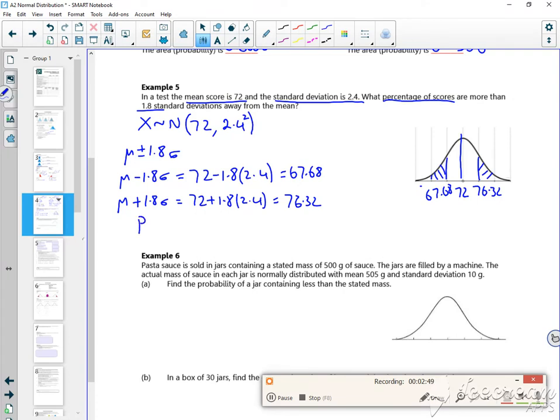So it's the same as the other example. So 67.68 less than x less than 76.32. So if you stick that in your calculator, that gives you 0.9281.